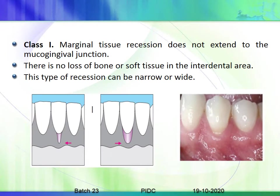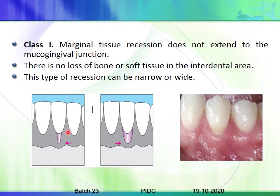Class 1: marginal tissue recession that does not extend beyond the mucogingival junction. There is no loss of bone or soft tissue in the interdental area. This type of defect can be either narrow or wide.